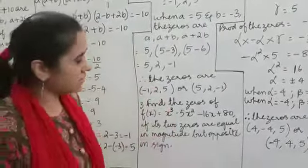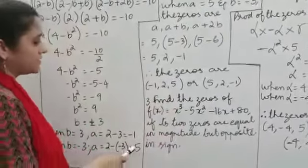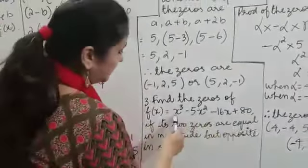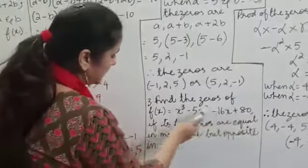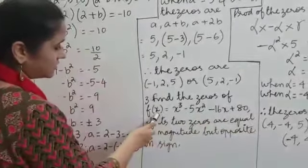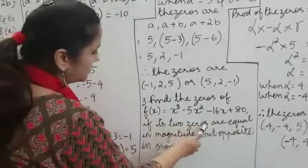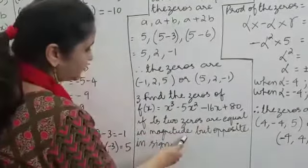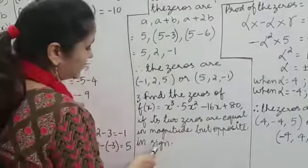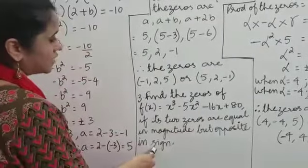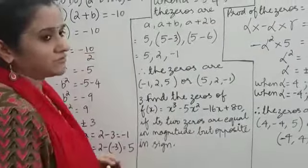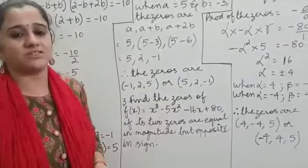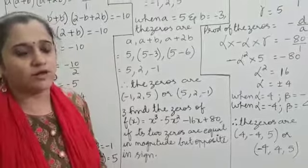This is the third one now. Here again we have a cubic polynomial f of x. Two zeros are given to be equal in magnitude but opposite in sign. With the help of this information, we need to find all the three zeros of the polynomial.